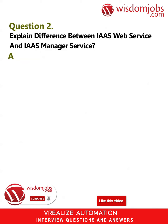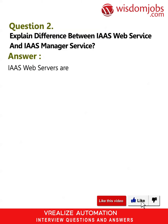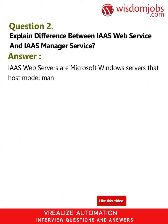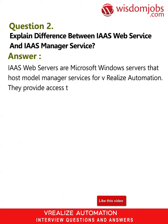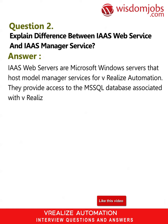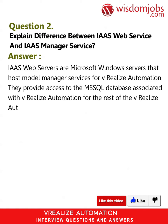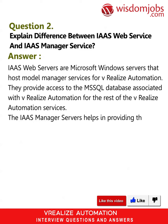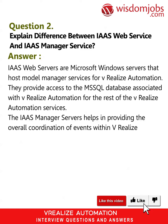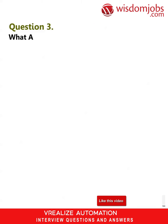Question 2: Explain the difference between IaaS web service and IaaS manager service. Answer: IaaS web servers are Microsoft Windows servers that host model manager services for vRealize Automation. They provide access to the MS SQL database associated with vRealize Automation for the rest of the vRealize Automation services. The IaaS manager servers help in providing the overall coordination of events within vRealize Automation.